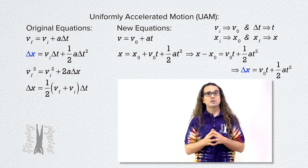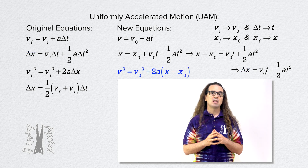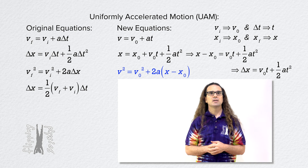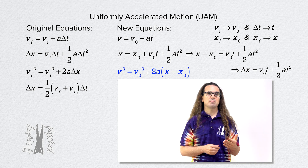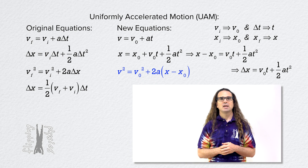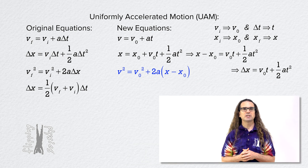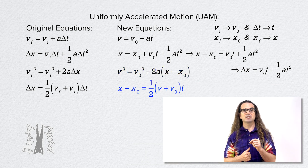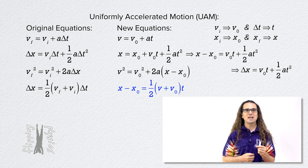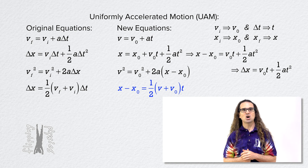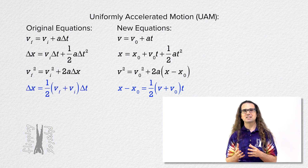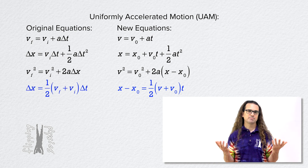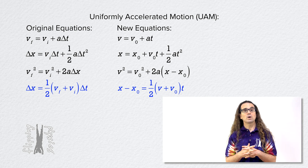The third new UAM equation is velocity squared equals velocity naught squared plus two times acceleration times the quantity position minus position naught. And the fourth UAM equation is: position minus position naught equals one-half times the quantity velocity plus velocity naught, all times time. This fourth UAM equation is not on the AP equation sheet for some reason; however, you are welcome to use it.